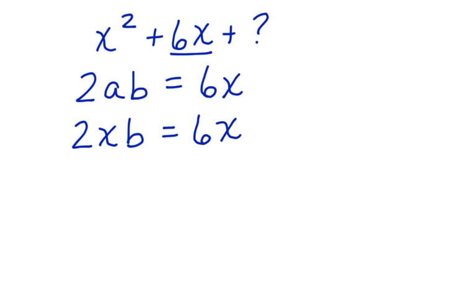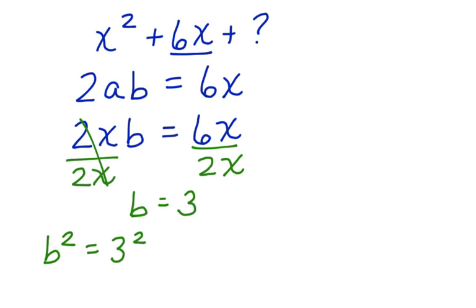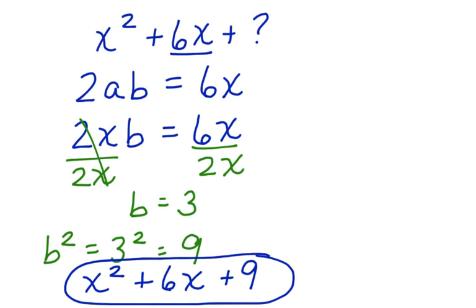Now, we want to get b alone. Let's divide both sides by 2x. These cancel. b is equal to 3. We complete the square. b² equals 3² equals 9. And our final answer is x² + 6x + 9. This is our final answer, and our work is complete.